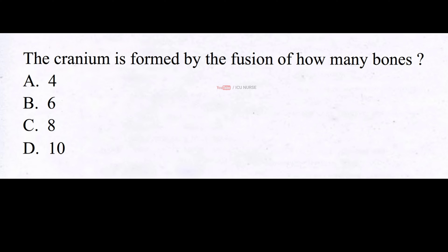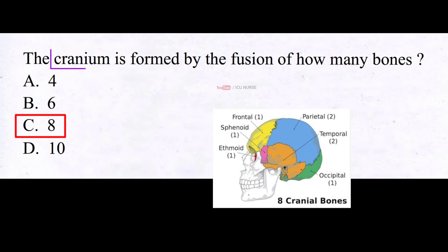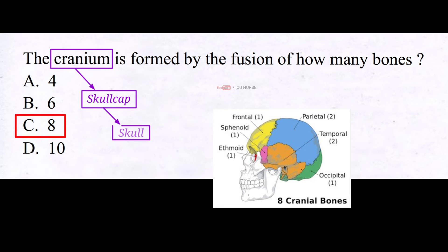The cranium is formed by the fusion of how many bones? A. 4, B. 6, C. 8, D. 10. The cranium is formed by the fusion of several bones. In adults, the cranium consists of eight bones that come together to protect the brain and form the upper part of the skull. These bones are: one frontal bone, two parietal bones, two temporal bones, one occipital bone, one sphenoid bone, and one ethmoid bone. These eight bones fuse together during development to form a single solid structure that provides protection and support for the brain.